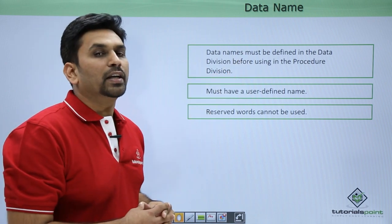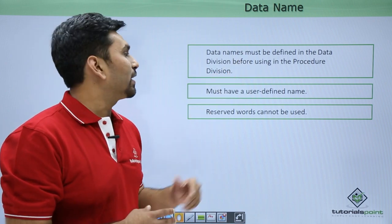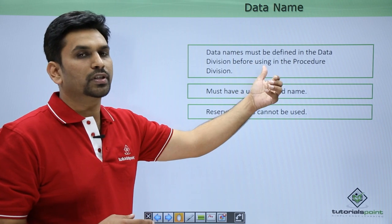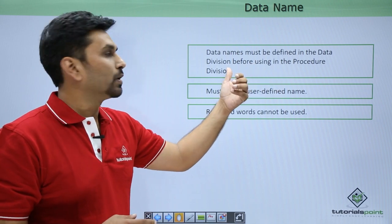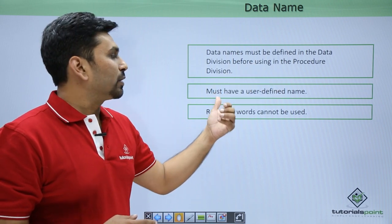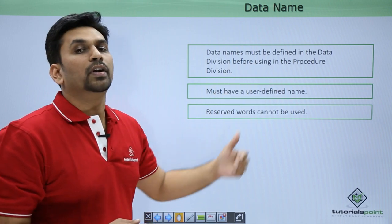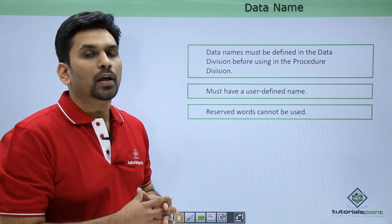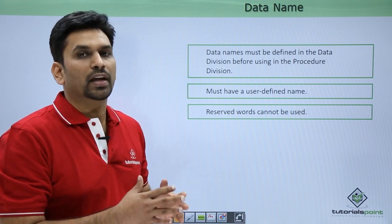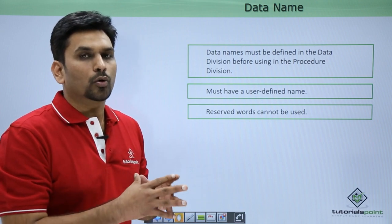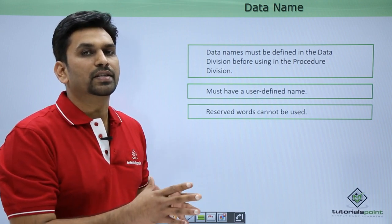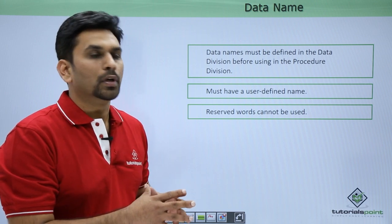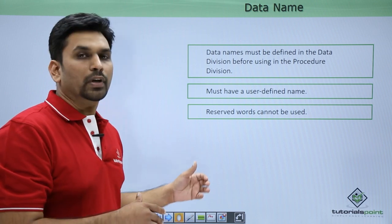Data name must be defined in the Data Division before using it in the Procedure Division. It must be a user-defined name — you cannot use COBOL reserved words. For example, if you use 'add', the COBOL program will treat this as an addition operation, not a variable name, and it will give you an error.